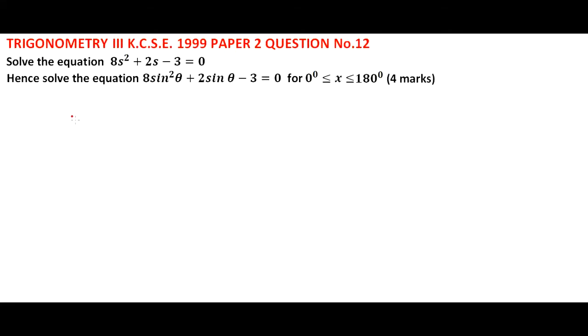Solve the equation 8s² + 2s - 3 = 0, hence solve the equation 8sin²θ + 2sinθ - 3 = 0 within the range of 0° to 180°.